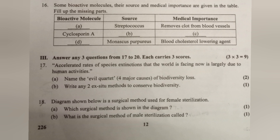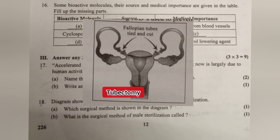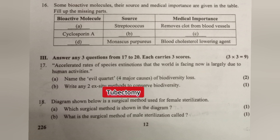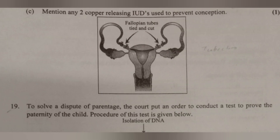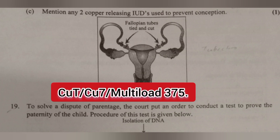Question 18: The diagram shows the surgical method used for female sterilization. A. Which surgical method is shown? B. Which is the surgical method of male sterilization called? Answer: Vasectomy. C. Name a copper-releasing IUD used to prevent conception. Answer: CuT, Cu7, or Multiload 375.